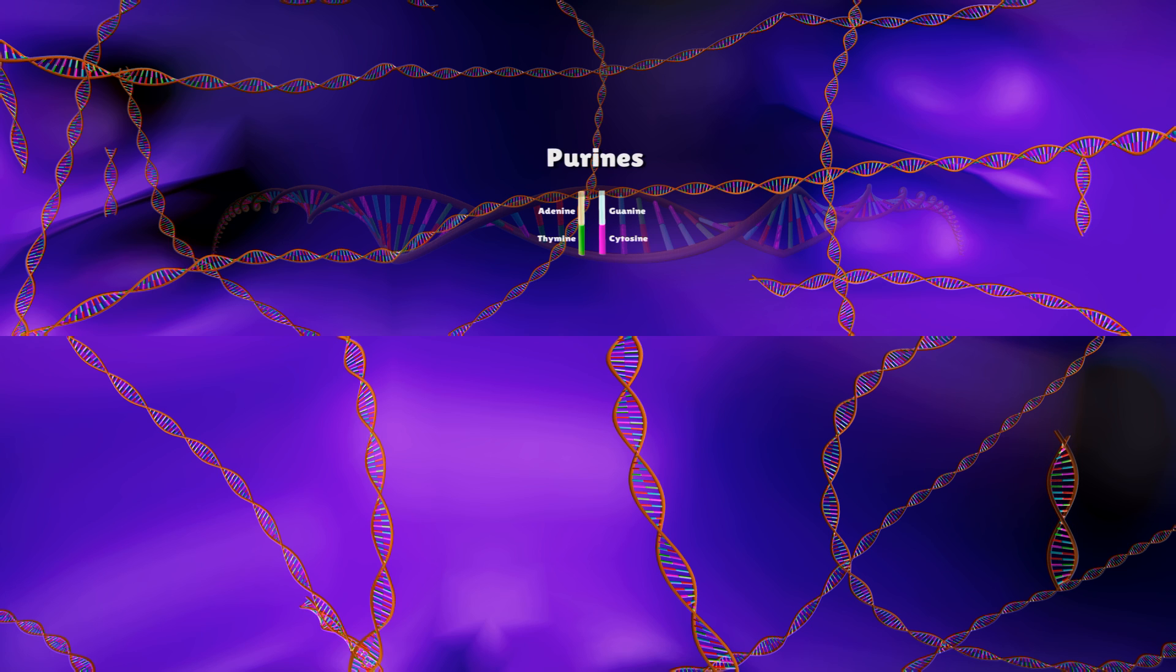Adenine and guanine are called purines because they have a double carbon ring. Cytosine and thymine are called pyrimidines and have a single carbon ring.